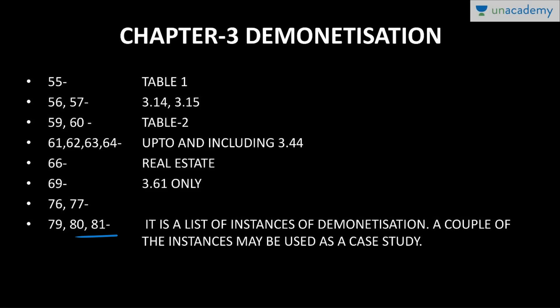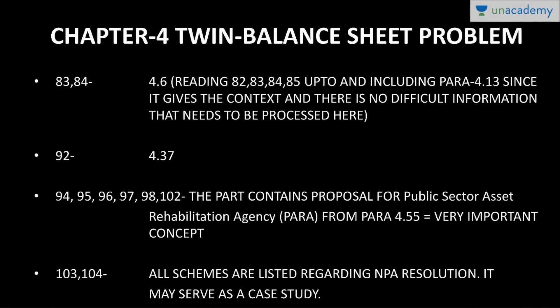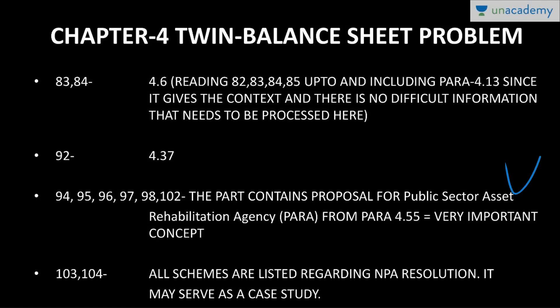In chapter four, start from page 82. You can read pages 82 to 85 up to and including paragraph 4.13 — there's no difficult information there. Then page 92, paragraph 4.37, and pages 94 through 102. This part contains the proposal for a Public Sector Asset Rehabilitation Agency, which is very very important for understanding NPAs of banks and how to retrieve them. From paragraph 4.55 onwards is a very important concept.